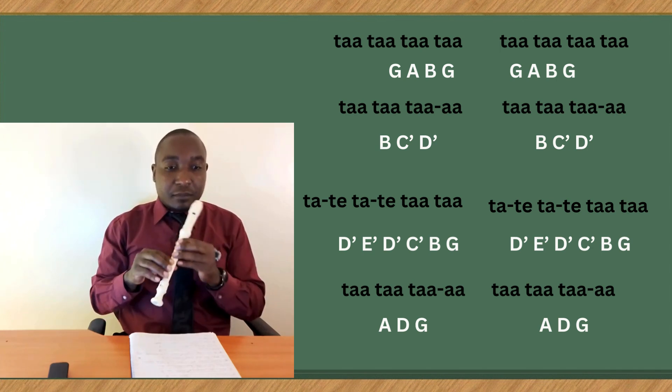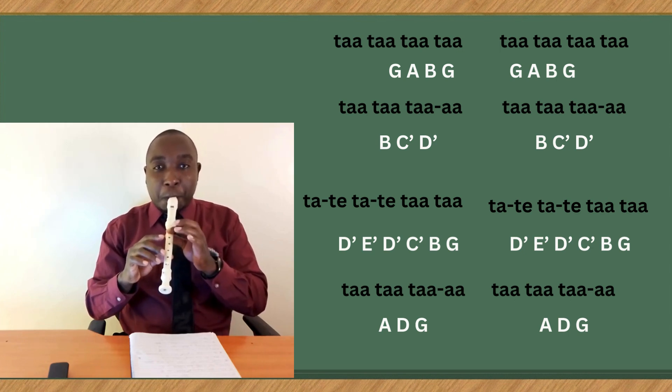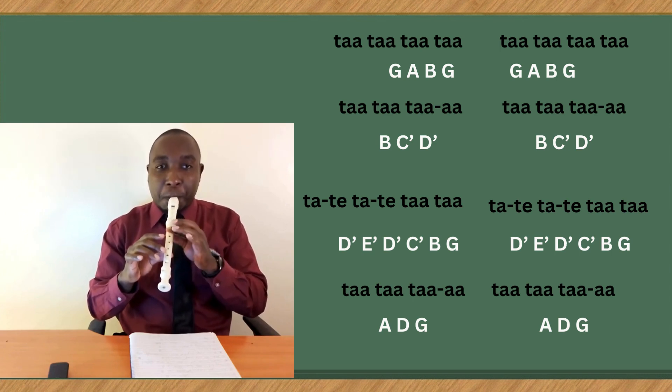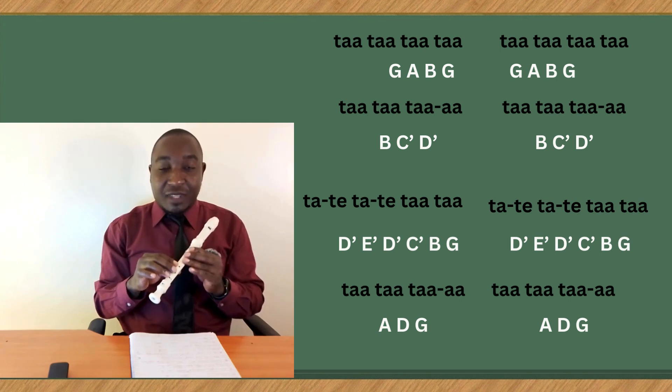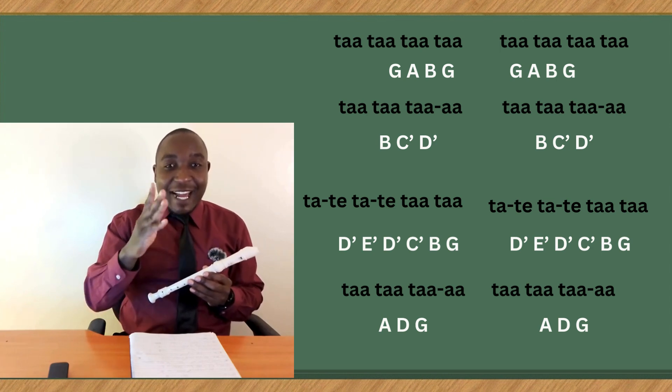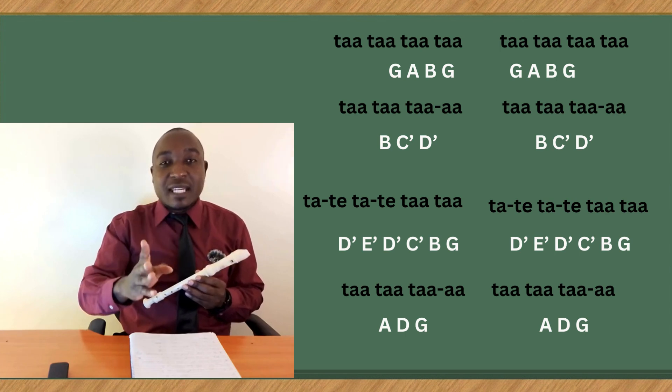Line three, we start with high D. You should have noticed there's a difference in how we play high D, high E, high D, high C, when B, G.